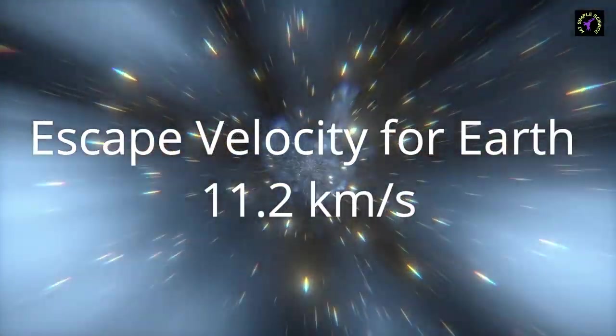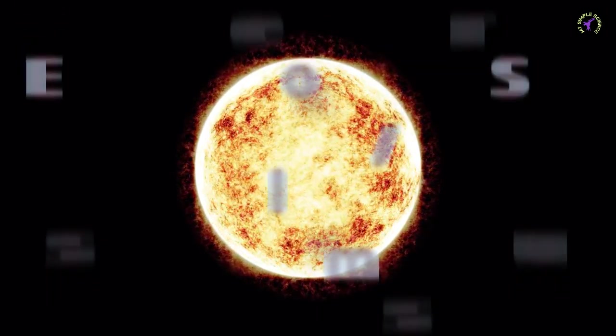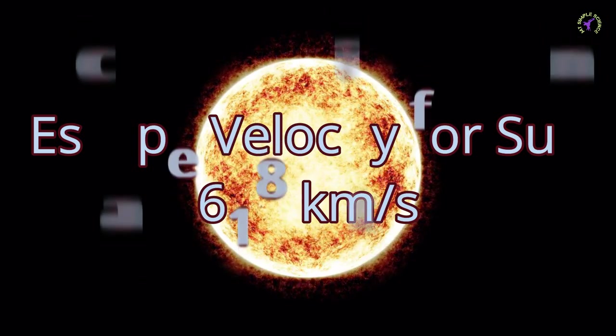The escape velocity of Earth is 11.2 km per second. Neglecting the air atmosphere on Earth, if we throw any object with 11.2 km per second, the object escapes Earth's gravitational field and travels in space. If we do the same thing on the Moon, the ball must be thrown at 2.4 km per second to escape from the Moon's gravitational field, so the escape velocity of the Moon is 2.4 km per second. For the Sun, the escape velocity is 618 km per second.